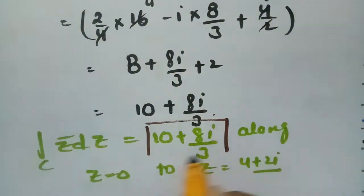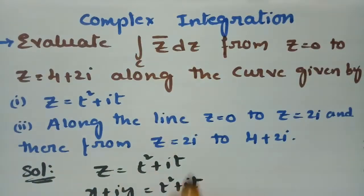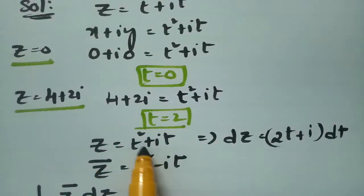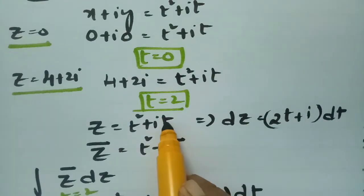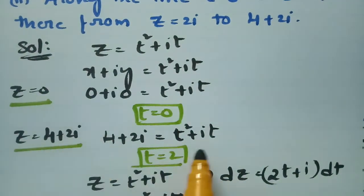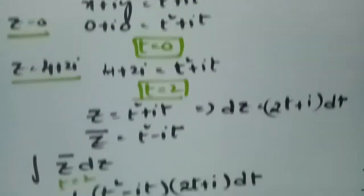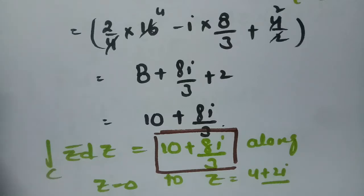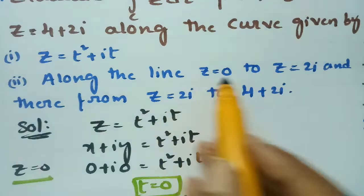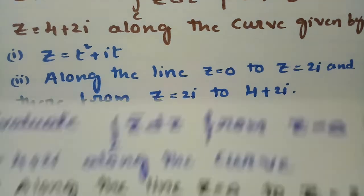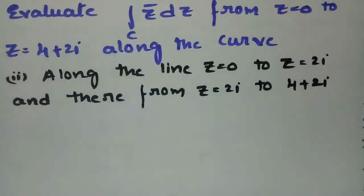So along the curve z = t² + it from z=0 to z=4+2i, the value of ∫z̄ dz = 10 + 8i/3. Now for the second part, we evaluate along the line from z=0 to z=2i, then from z=2i to z=4+2i.